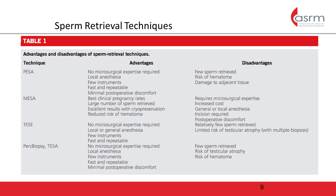The two techniques used for obtaining sperm from the epididymis include percutaneous epididymal sperm aspiration, known as PESA, and microsurgical epididymal sperm aspiration, known as MESA. PESA involves placing a butterfly needle directly into the head of the epididymis and aspirating epididymal fluid, which is then inspected for sperm for use with IVF and ICSI. This technique has the advantage of being performed in the office with only local anesthesia. It is fast, repeatable, and does not require any microsurgical expertise. However, there is a risk of postoperative hematoma and damage to adjacent tissue, and a risk that only a few sperm will be retrieved.